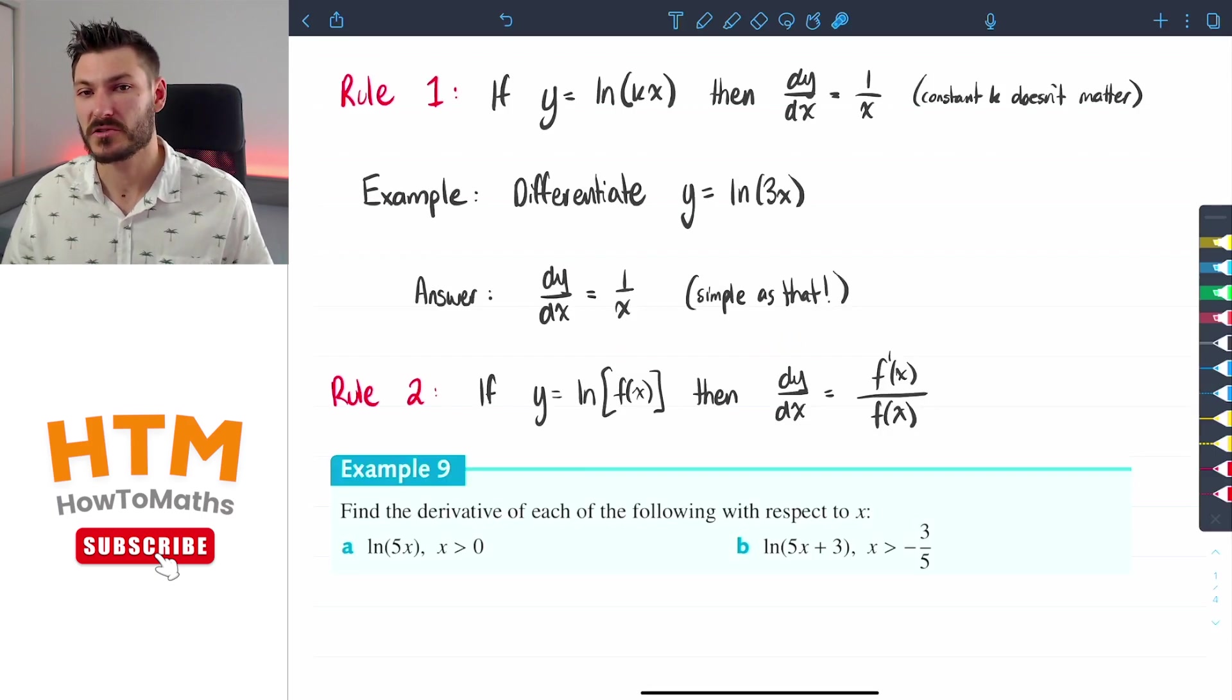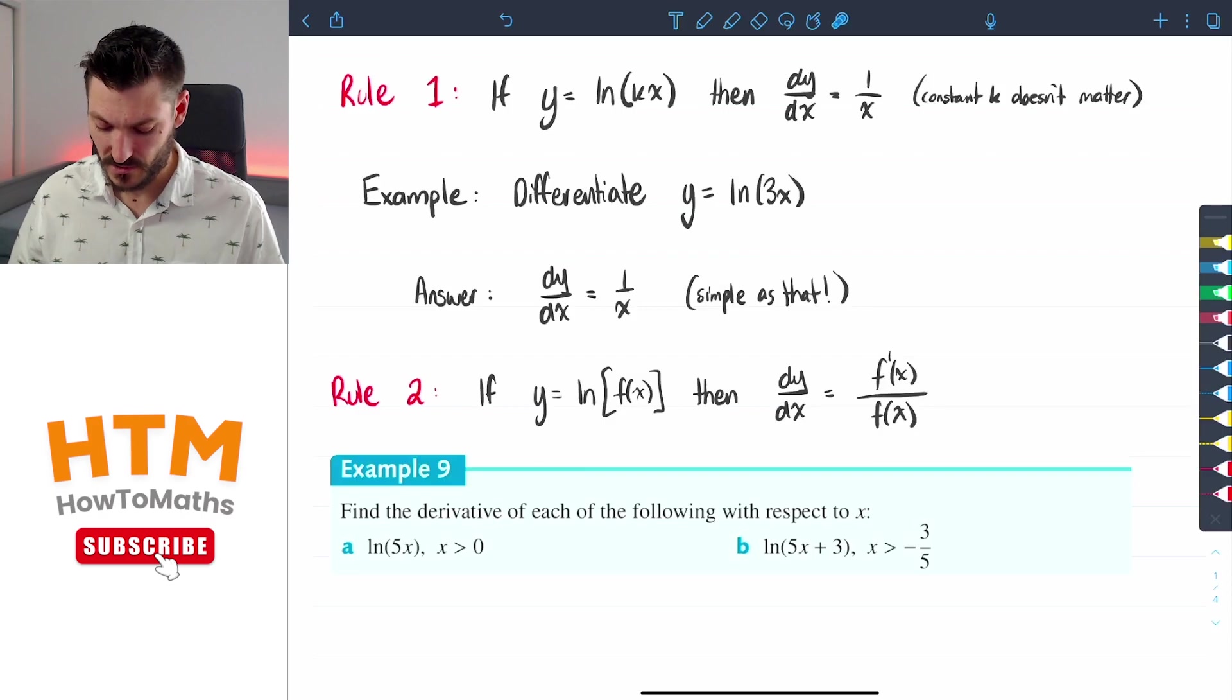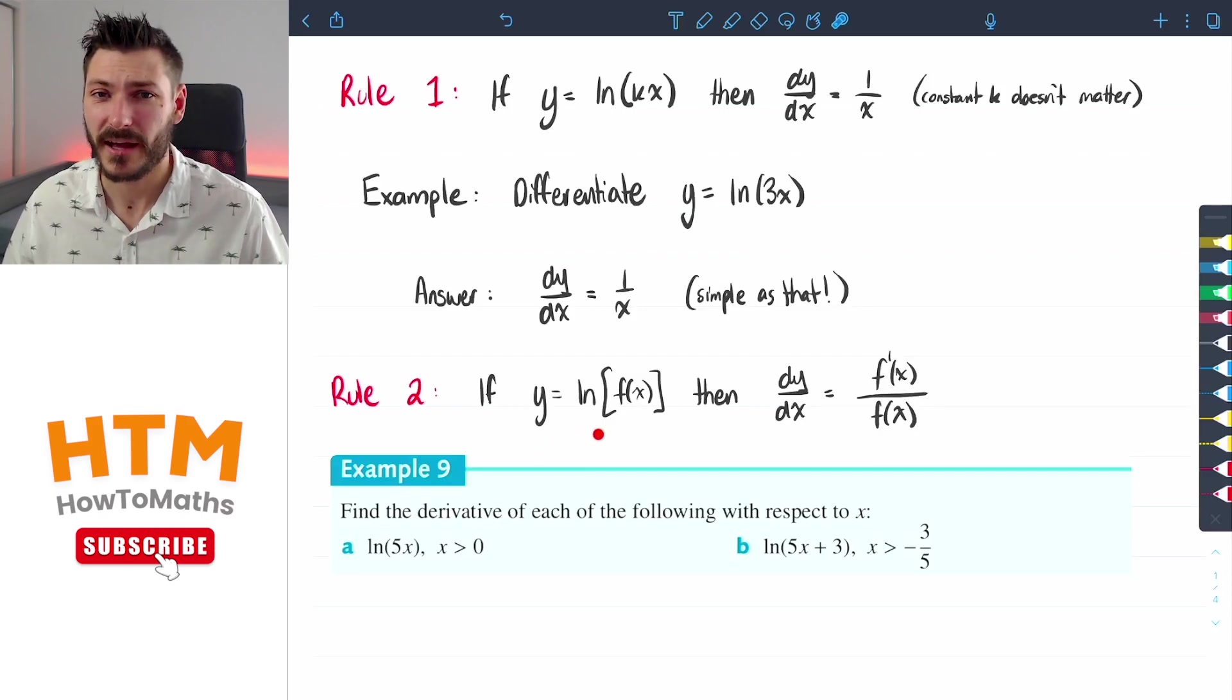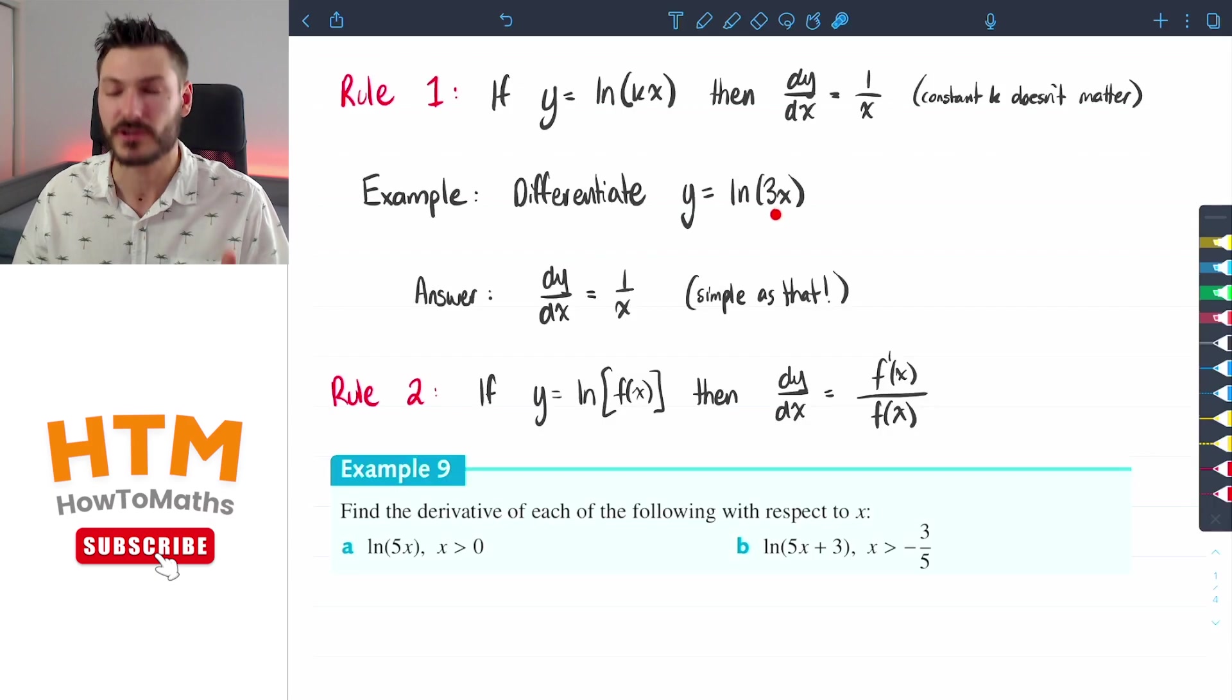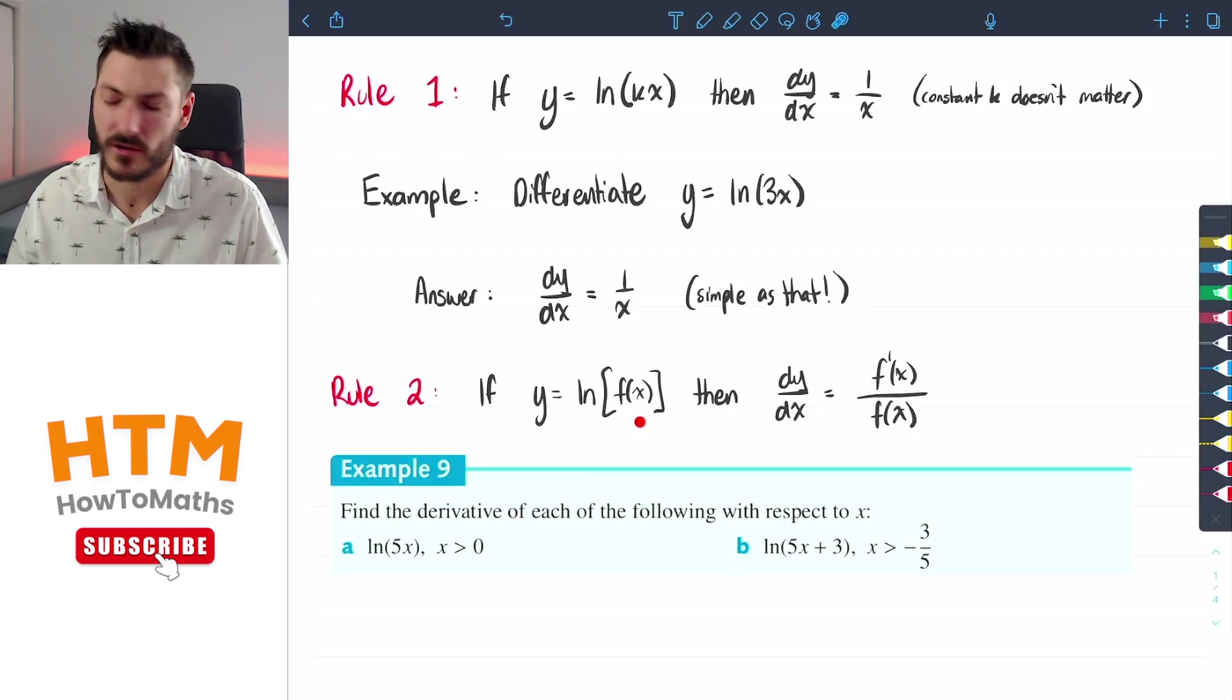In rule number two I'm going to show you why this happens and why the k value doesn't matter. So rule number two says if you have y equals ln of some function of x - and I acknowledge that 3x is technically a function of x which is why this works - but we're typically thinking of more complex functions. You could have a trigonometric function in here, you could have a cubic, you could have all sorts of stuff. This rule holds up.